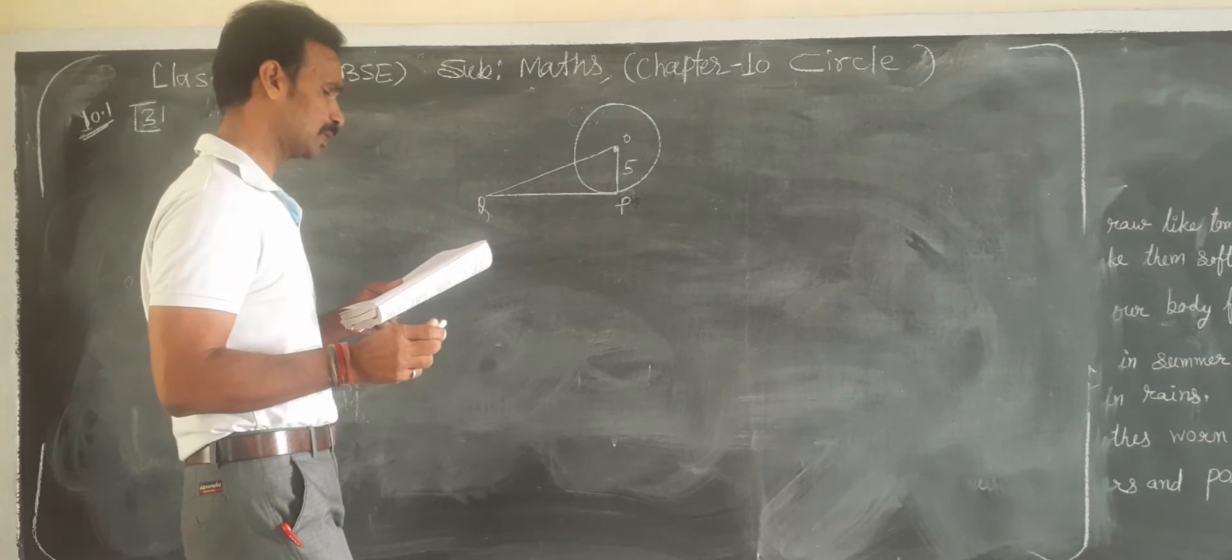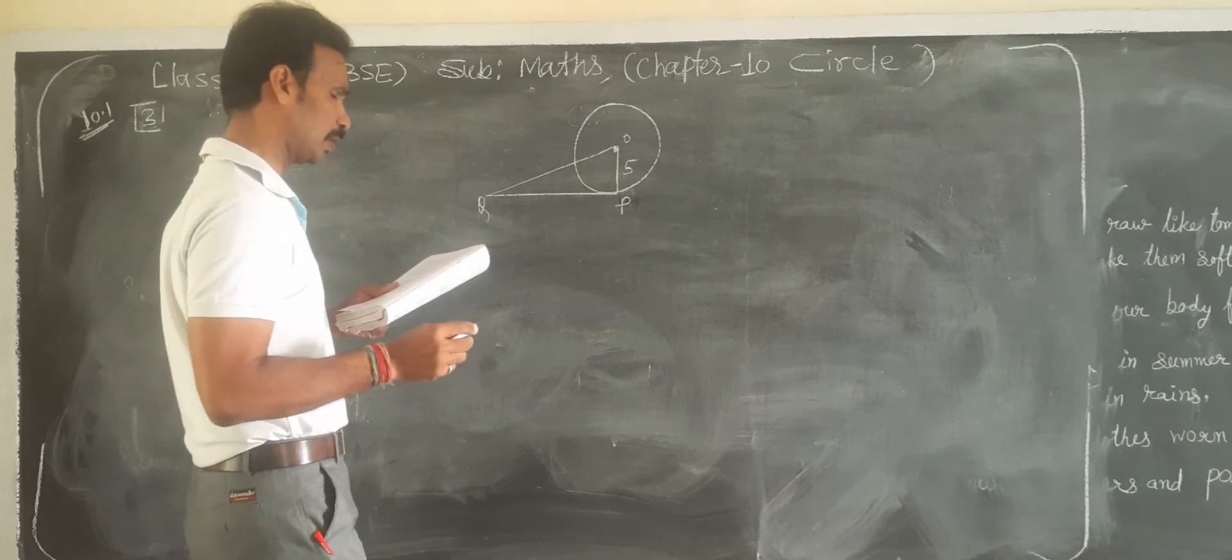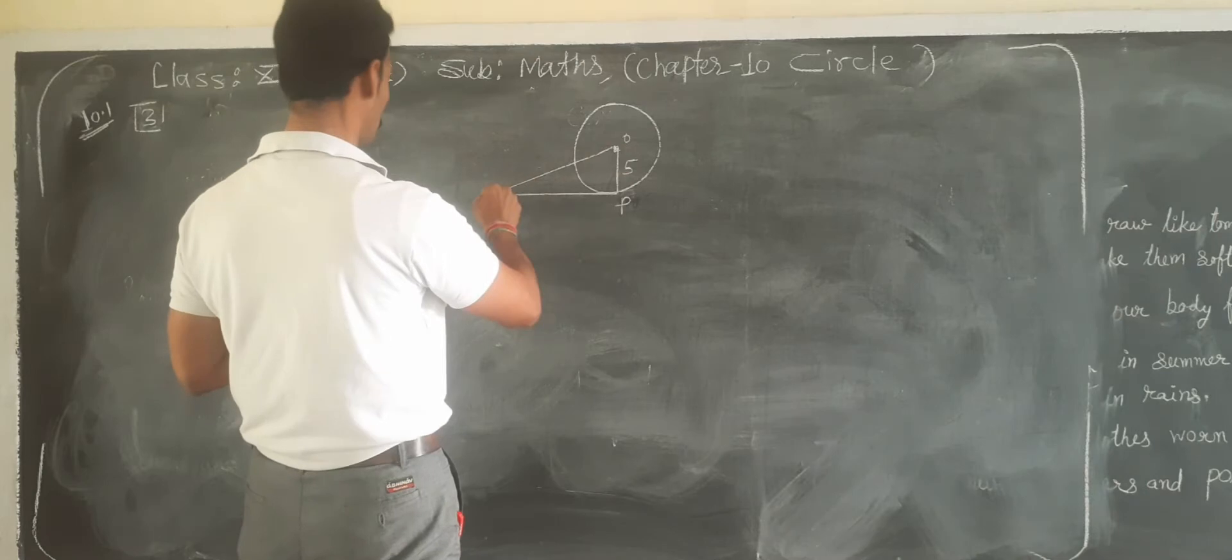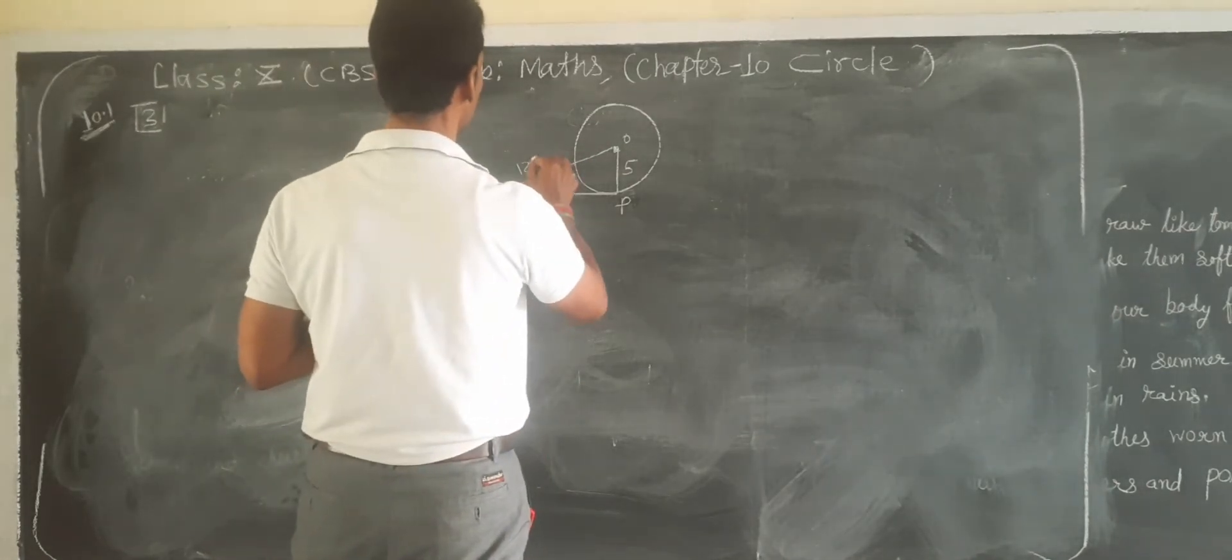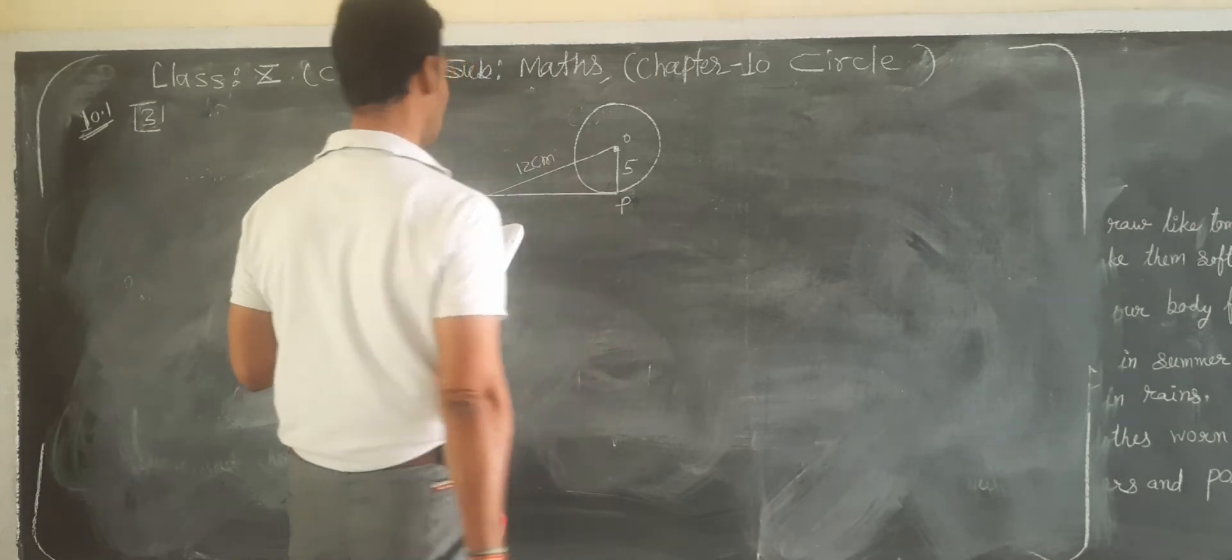Circle of radius 5 cm. The line through the center O at point Q, and OQ equals 12 cm. This is 12 cm. Then find the length of PQ.